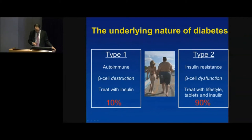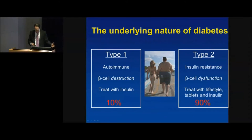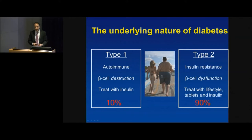Type 2 diabetes is underpinned by insulin resistance — insulin does not work as well in the body as it should. The beta cells also become dysfunctional and don't make as much insulin as they should. They still make some but not enough to keep sugar levels normal. It's treated with lifestyle changes, tablets, and eventually insulin therapy. By about 10 years of having diabetes, about half of people with type 2 will require insulin.